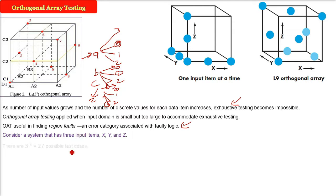Let us take three input values, for example three input items x, y, z. So three values, and each of them can take three values. So how many possible test cases are there? 3 to the power 3, which is 27. Now this is manageable.